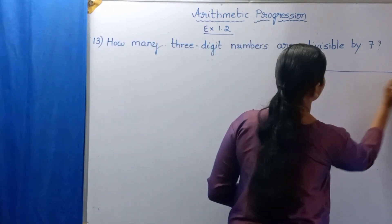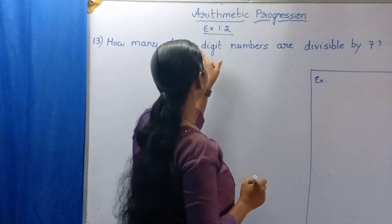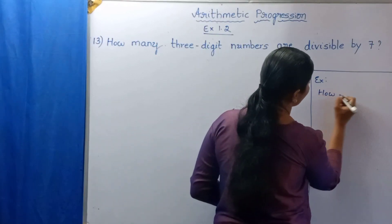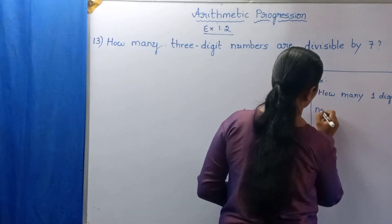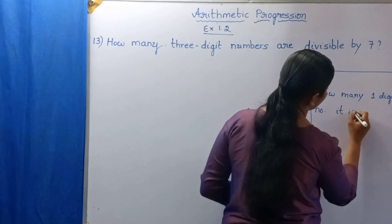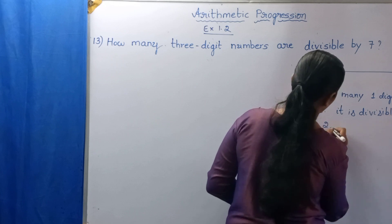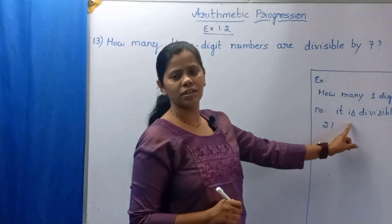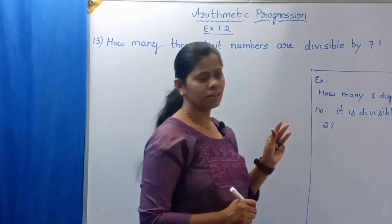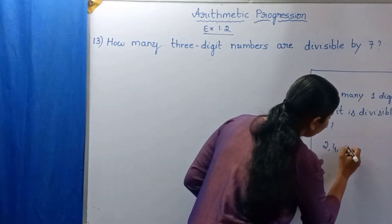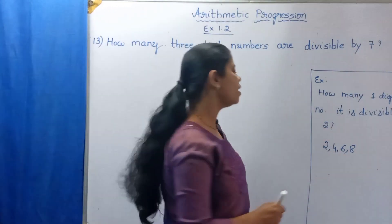Same type of question as an example: How many 1-digit numbers are divisible by 2? You can say the answer easily. See here: 2, 4, 6, 8. These are the 1-digit numbers that are divisible by 2.